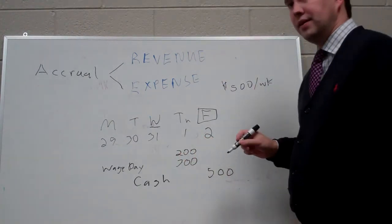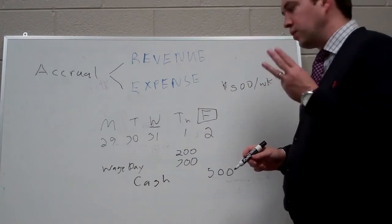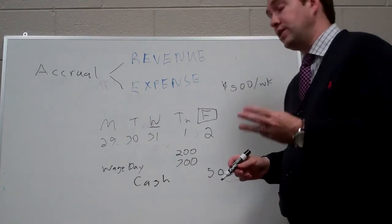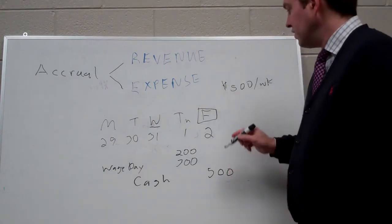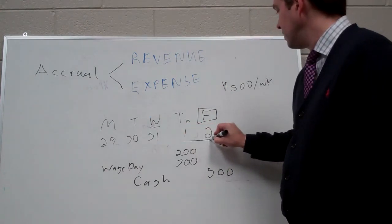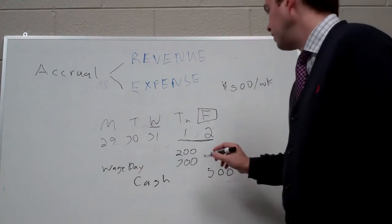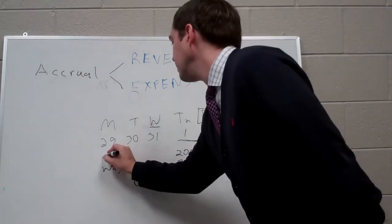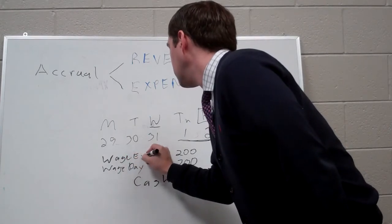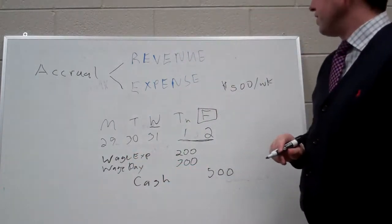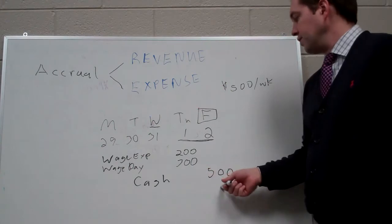And think about it. Last year we recorded $300 of wage expense. We're paying out $500 of wage expense. So for these two days, we need to record another $200 of wage expense. Now the journal entry balance.